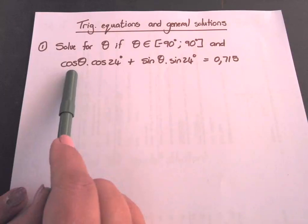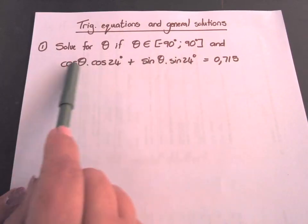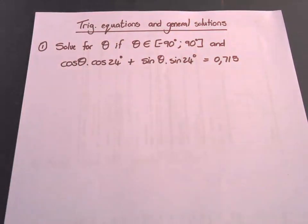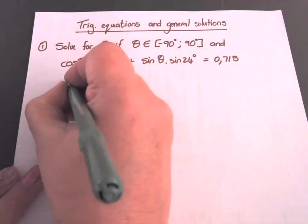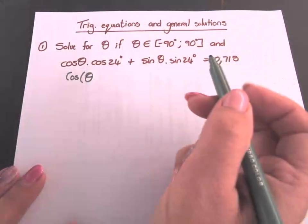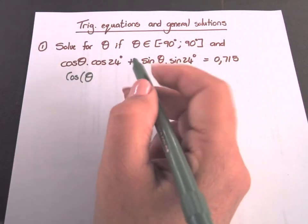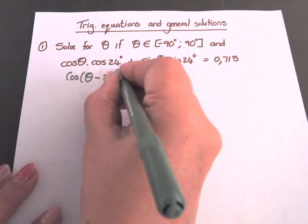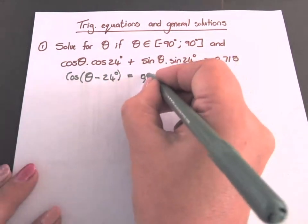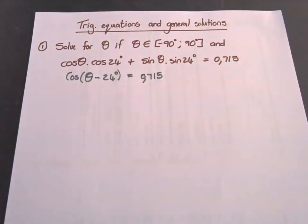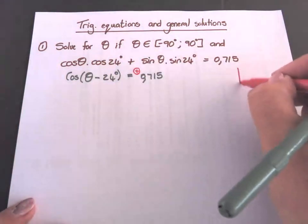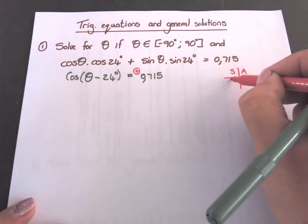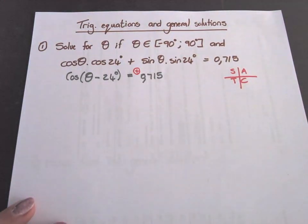I see a pattern: cos cos, sine sine. So what does this simplify to? Cos cos, sine sine simplifies to cos of theta minus — cos changes the sign — minus 24 degrees. And that equals 0.715. This is a positive answer, so on our cos diagram we have to look at where cos is positive — those two quadrants.